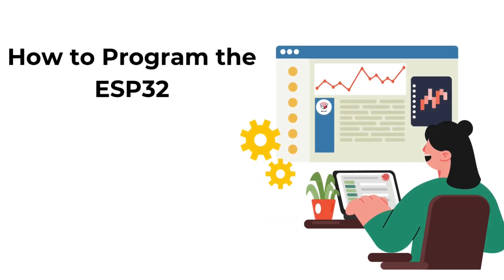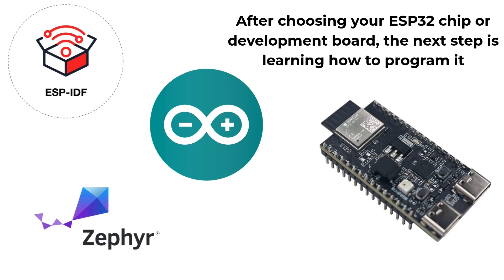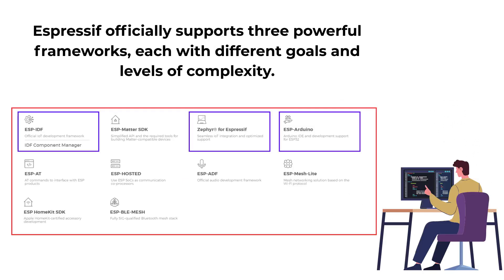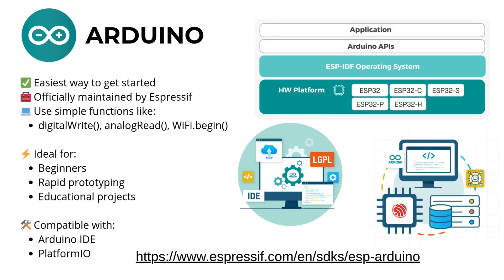How to program the ESP32? After choosing your ESP32 chip or development board, the next step is learning how to program it. The ESP32 officially supports three main frameworks, each with different goals and levels of complexity. Arduino: the easiest way to get started is with the Arduino framework for ESP32, officially maintained by Espressif. It allows you to write code using simple high-level functions like digitalWrite, analogRead and WiFi.begin. It's perfect for beginners, rapid prototyping and educational projects, and works well with both the Arduino IDE and PlatformIO.